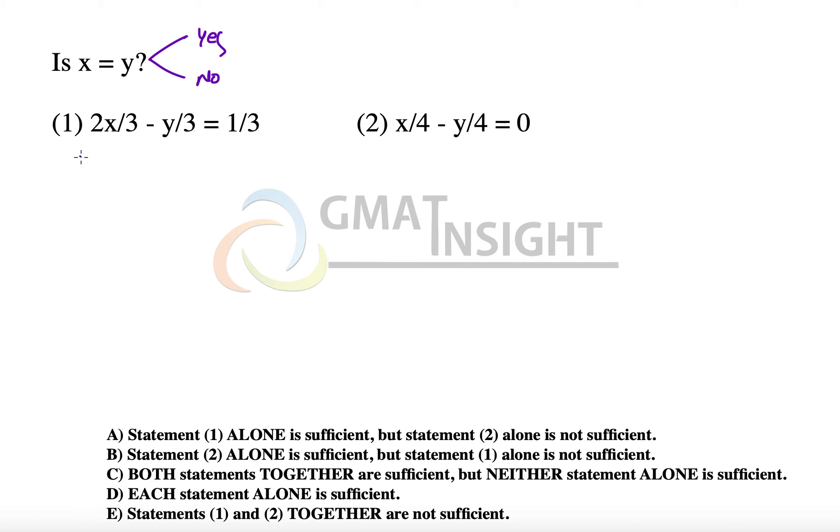Let's quickly simplify this. It becomes 2x minus y whole divided by 3 is equal to 1 by 3, which gives us 2x minus y is equal to 1.